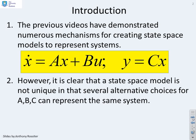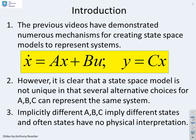However, viewers will have noticed by now that a state-space model is not unique, in that several alternative choices for A, B and C can represent the same system. Implicitly, different choices for A, B and C imply different state definitions, and for many of these the states will have no physical interpretation.